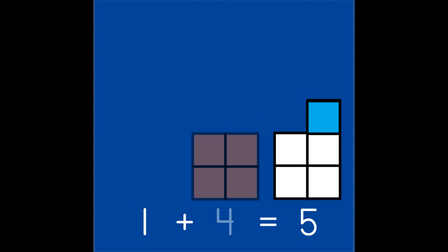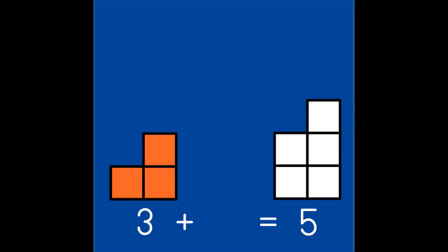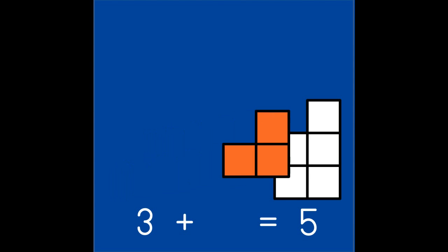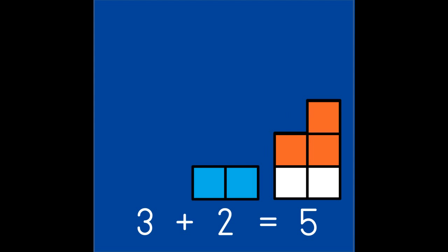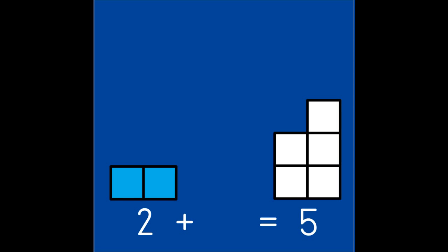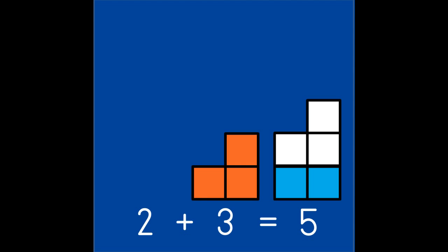We can switch the partners and put the 1 in the puzzle first and see that we need 4 to make 5, because 1 and 4 are partners of 5. What number do you think is 3's partner to make 5? Let's switch the partners and put the 2 in our puzzle first. We can see that 2 needs 3 to make 5.